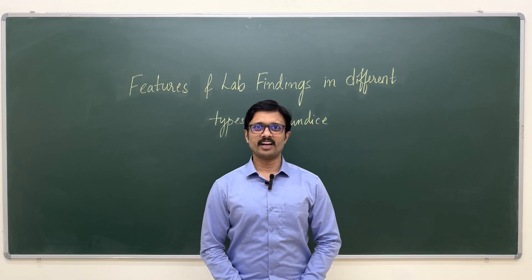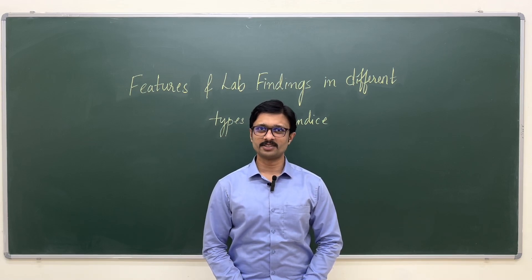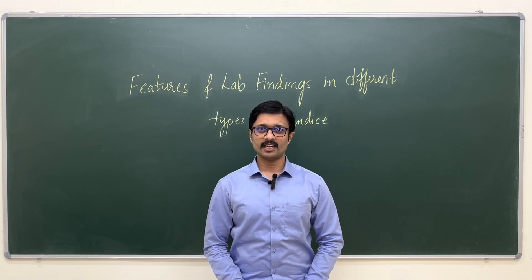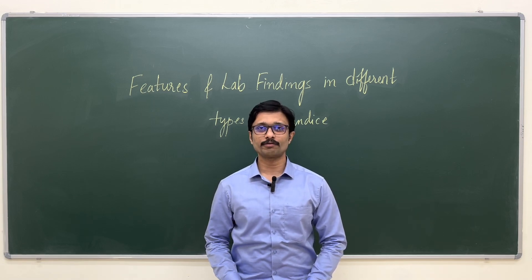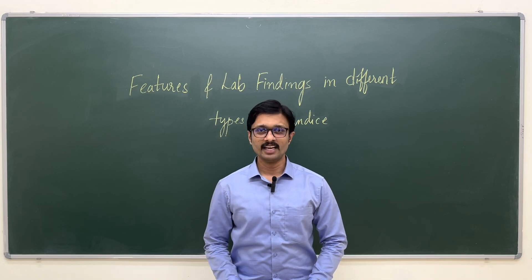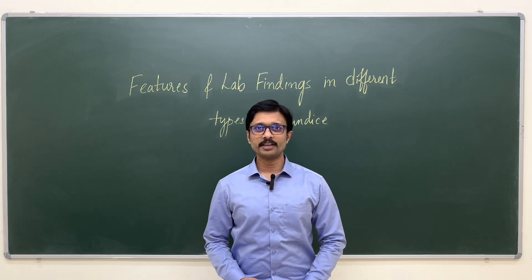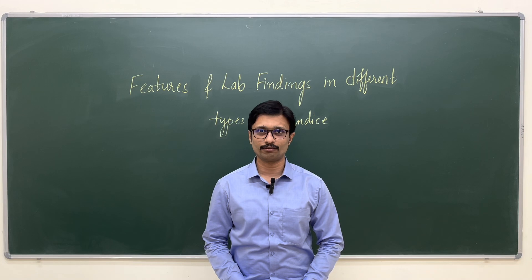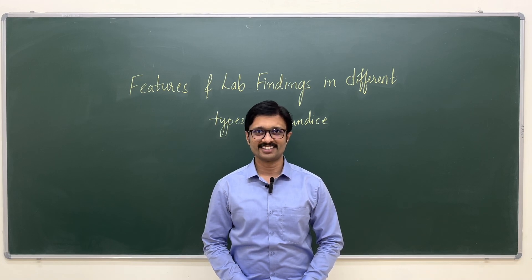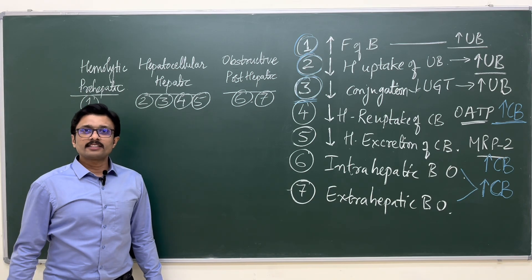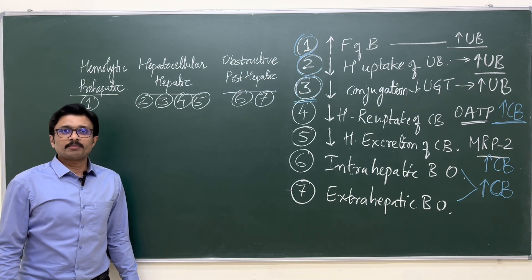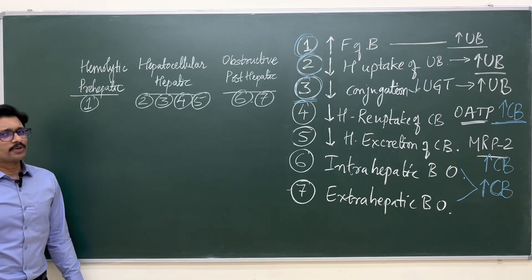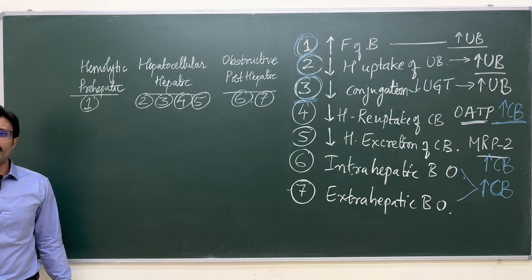Hi everyone. In the last lecture I explained to you what is jaundice, where do you look for jaundice, what are the causes of jaundice, and I introduced the different types of jaundice. In this class I will explain the different features of different types of jaundice and also the laboratory investigating findings of jaundice. Now let us understand some of the features in these three types: Hemolytic jaundice, Hepatocellular jaundice, and Obstructive jaundice.